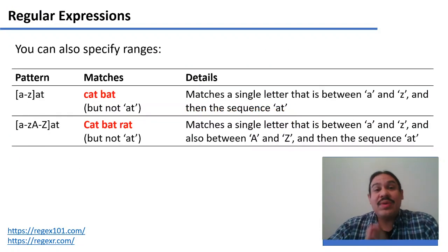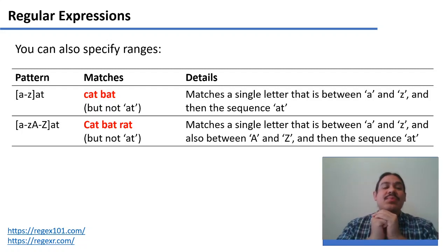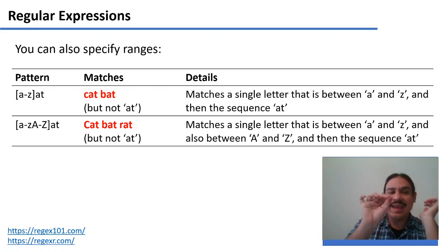You can also specify ranges for the options within the square brackets. For example, if you tell it to look for every character between A and Z, and then for the characters A-T, it's going to find words like cat and bat, but it is not going to find at, because the pattern tells it to look for three things. One character in the range, the A and the T.